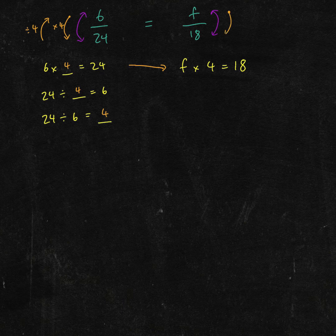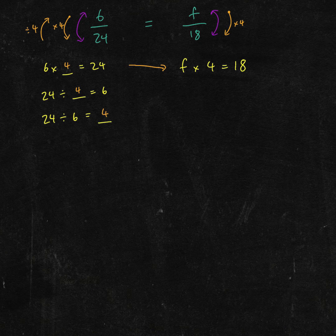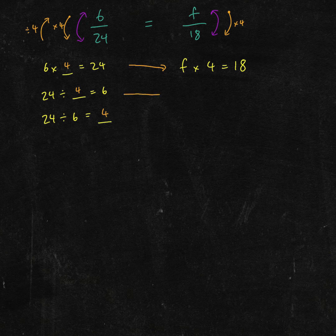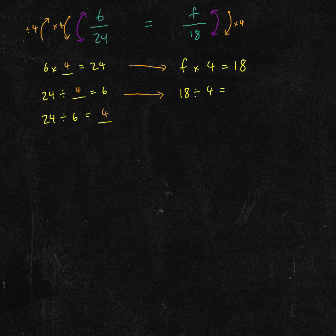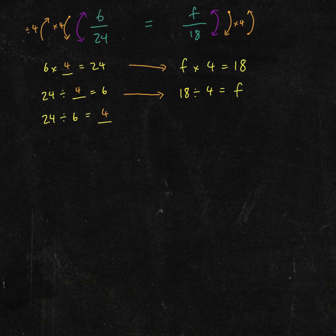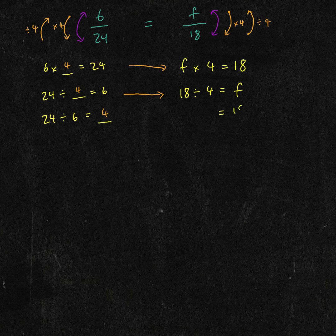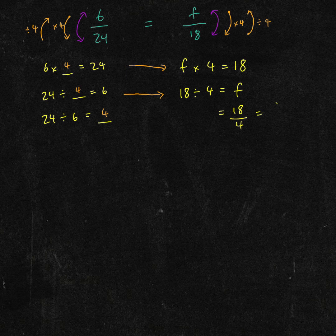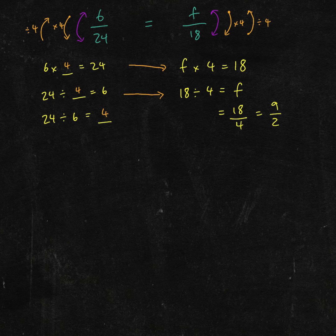So F times 4 should equal 18. Inversely, if 24 divided by 4 equals 6, then 18 divided by 4 should equal F. That's going the other way. So 18 divided by 4 equals 18 over 4, which we can simplify to 9 over 2, and half of 9 is equal to 4.5.